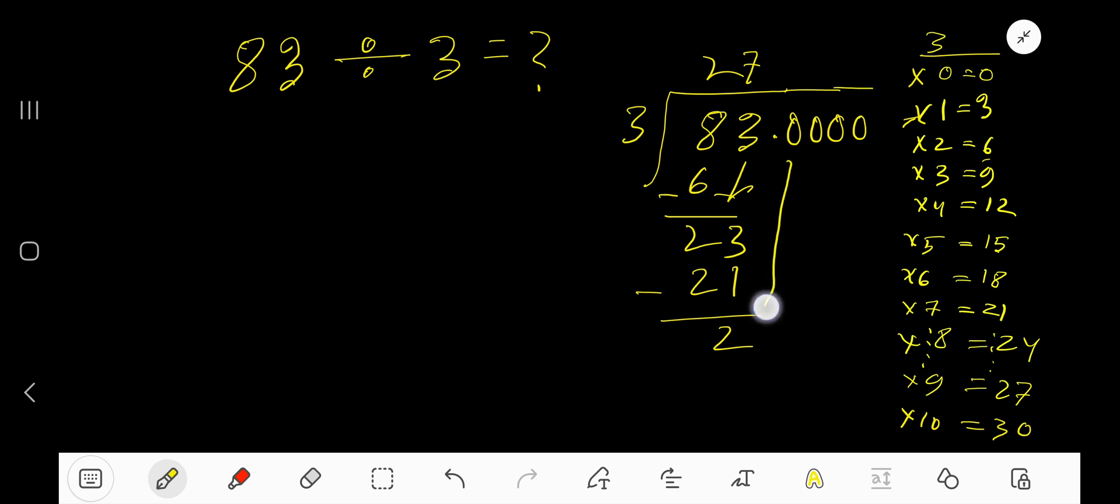Add a number of zeros. Bring down the first zero. Before this zero there is a decimal. Decimal must come to the quotient directly. 3 goes into 20 how many times? 7 times 21, which is greater, so 6 times.